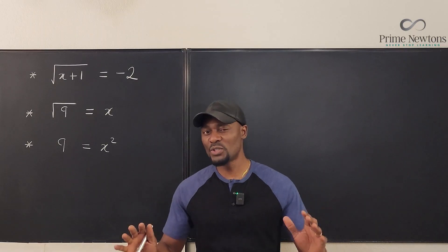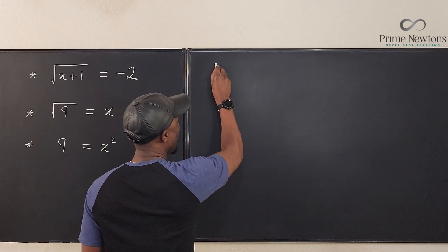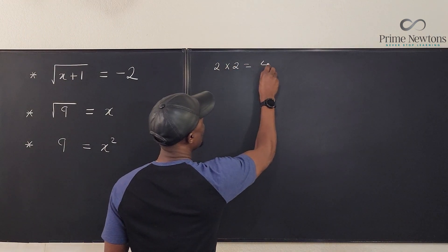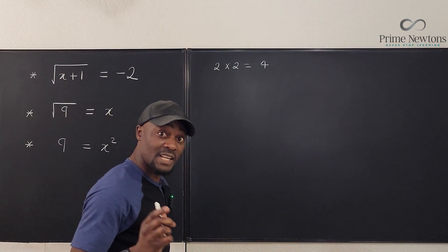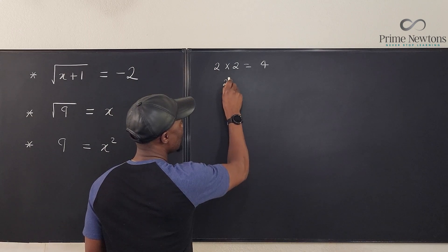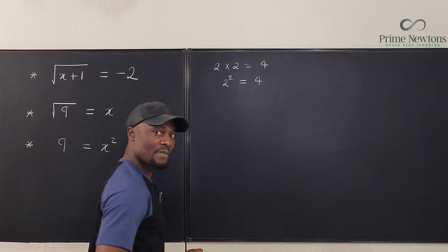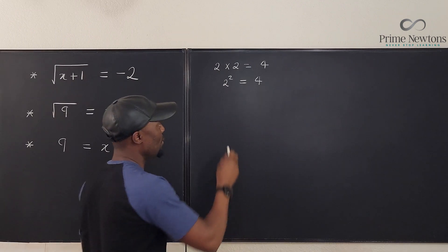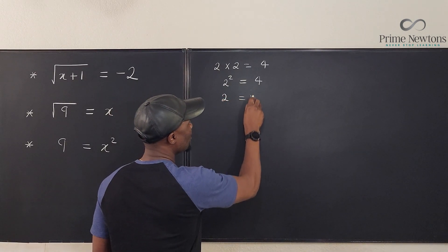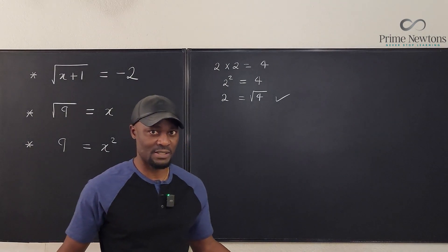Let us start with the most obvious thing. I know that two times two is equal to four. I can write it as two squared equals four, and it is also true that two equals the square root of four. Everybody in the world agrees on this.